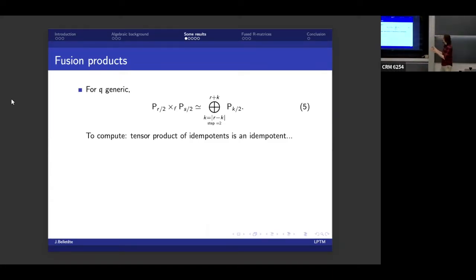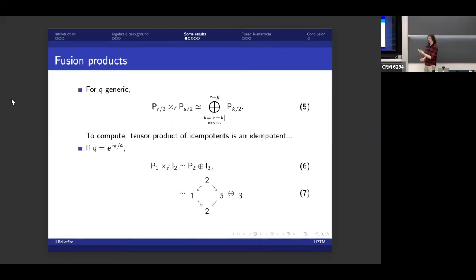And how to construct this? So the point is that the tensor product of idempotents is an idempotent. So remember, projective modules, it's generated by an idempotent. So this module here is generated by the tensor product of the idempotent that corresponded to these two guys. So all I have to do is take my new, bigger idempotent and break it down somehow as a sum of other idempotents, which is easier said than done.